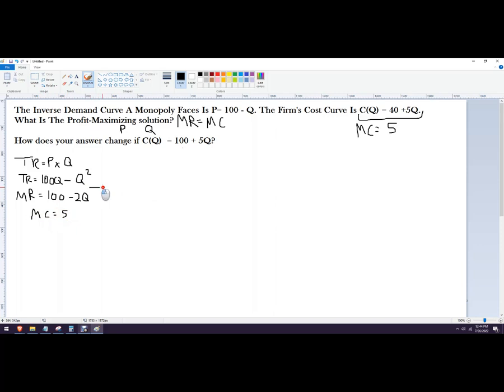Okay, so set both of those equal to each other to find profit maximization. I've got 5 equals 100 minus 2Q, and I'm just going to solve for Q.